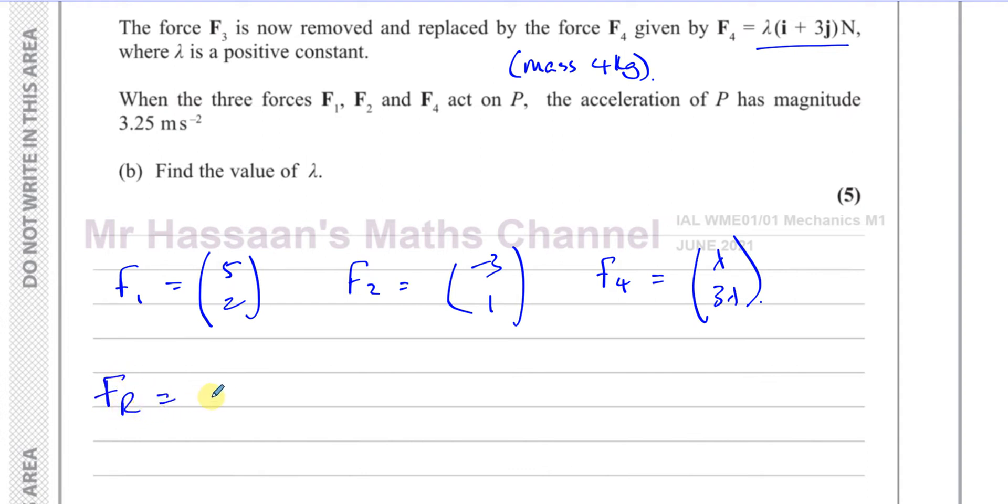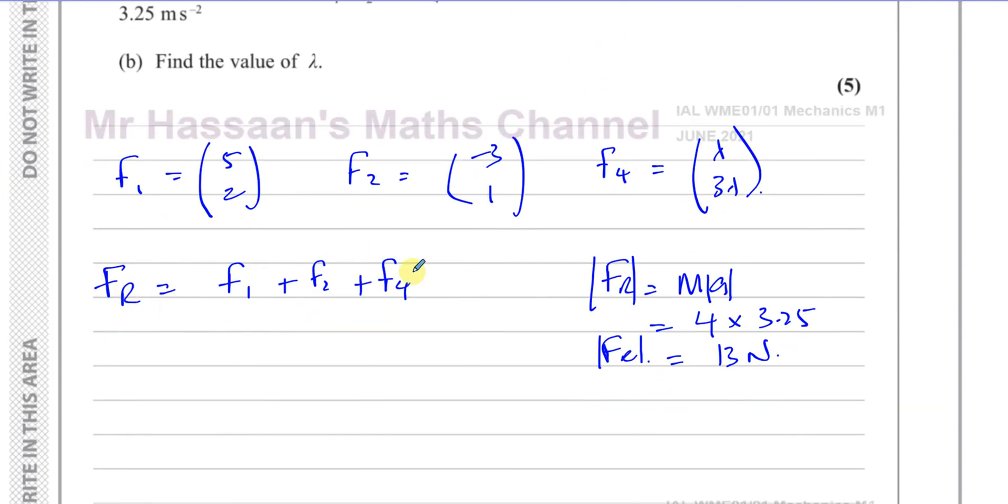When the three forces act on P, it's no longer in equilibrium. There's an acceleration of magnitude 3.25 meters per second squared. We know that the resultant force is equal to F1 plus F2 plus F4. And the resultant force is equal to the mass times the acceleration. So the magnitude of the resultant force equals 4 times 3.25, which is 13 newtons.